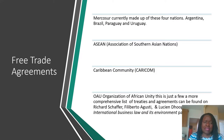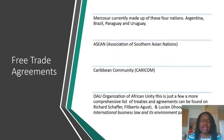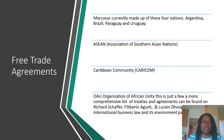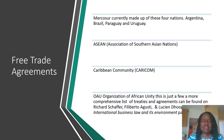In South America we have MERCOSUR, which comprises four nations — Argentina, Brazil, Uruguay, and Paraguay. Venezuela was there before but things changed. We also have trade blocs for the Asian nations, Caribbean communities, and the OAU for the African nations. There are many different trade agreements, and our textbook has a list of them. I have the citation in my PowerPoint.